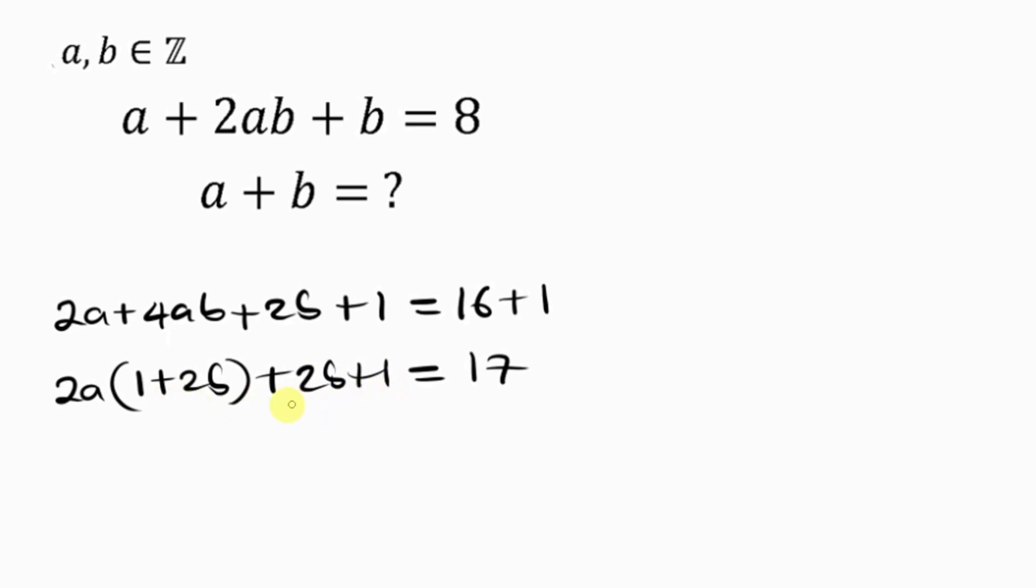So, that means 2B plus 1 is common, which we can factorize out. Factorizing 2B plus 1 out, what remains here? I get 2A plus 1, equal to 17. So, I have two numbers, two integers, which multiply to give 17.